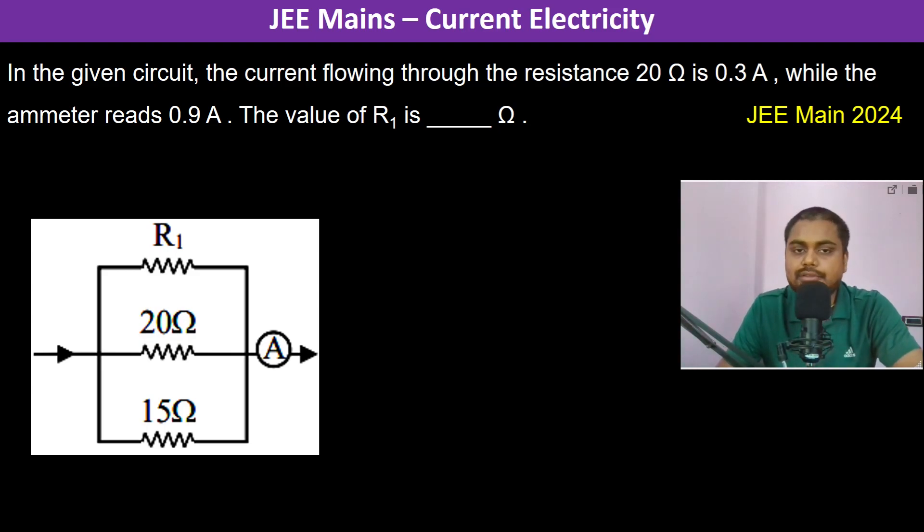In the given circuit, the current flowing through the resistance 20 ohm is 0.3 ampere. While the ammeter reads 0.9 ampere, so the total current flowing through the circuit is 0.9 ampere.